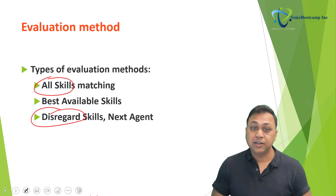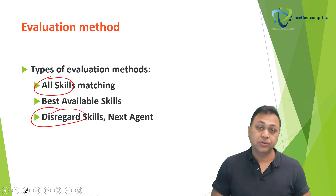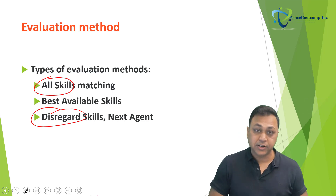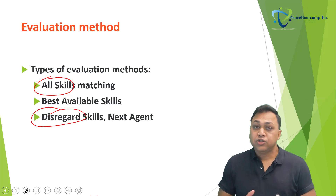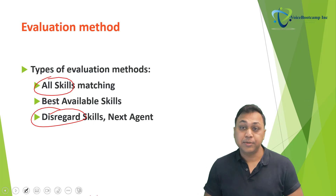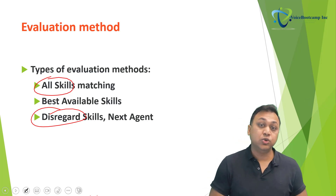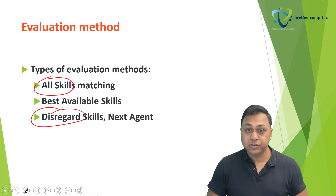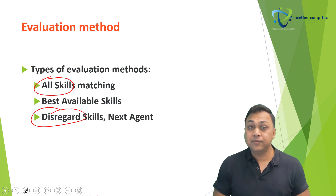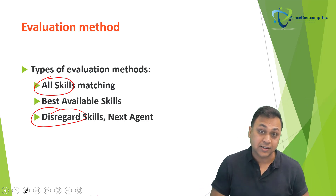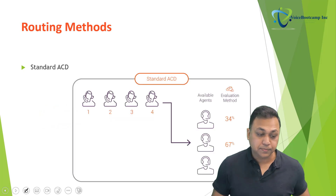Last but not least is disregard skills. Basically, select the next available agent. In this scenario, Genesys Cloud will transfer the incoming interaction to the agent who has the longest waiting time since their last interaction, even if the skills assigned to the interaction do not match the skills of that particular agent.